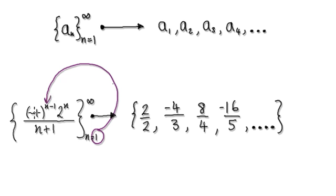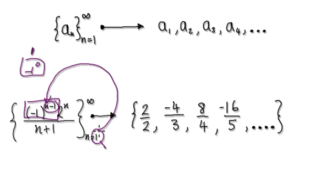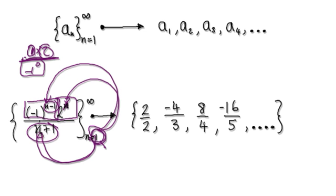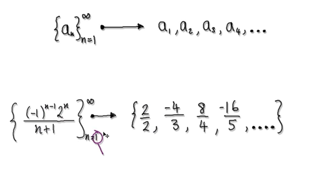In this case we start at 1, so we put 1 into n. This bit here would be negative 1 to the power of 1 take away 1, which is 0, so this thing here would be 1. Then you've got 2 to the power of n, so 2 to the power of 1 which is 2 — so it's 1 times 2. Then you divide by putting 1 into n here, which gives 2. So you've got 1 times 2 divided by 2.